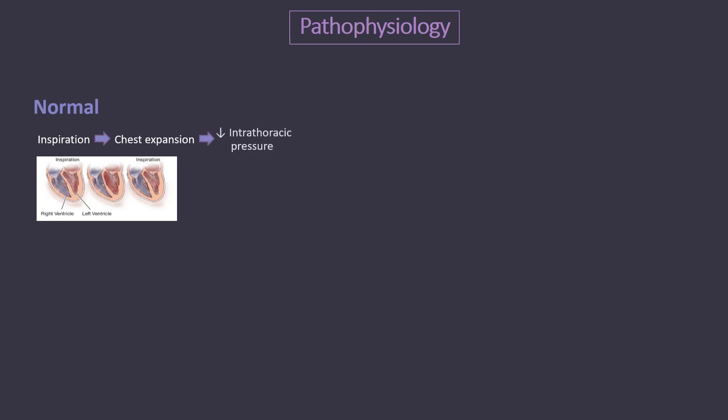What is the pathophysiology of this phenomenon? Normally, in healthy individuals, with chest expansion during inspiration, there is a reduction in intrathoracic pressure. This leads to increased venous inflow into the chest, and thus increasing right heart filling. However, this does not equate to an increased filling of the left heart during inspiration. This is because, as one inhales, the lungs expand and pull radial traction on the pulmonary vasculature, thus increasing its capacitance and momentarily sequestering blood in the chest.